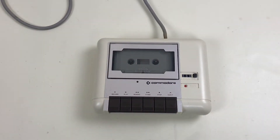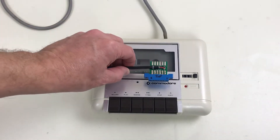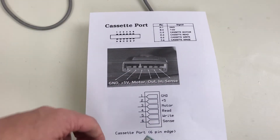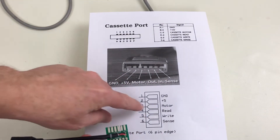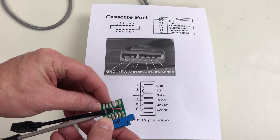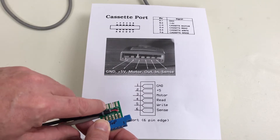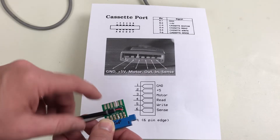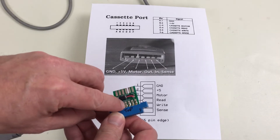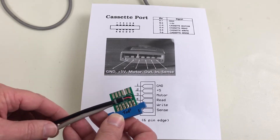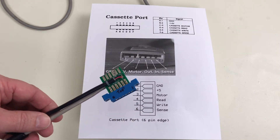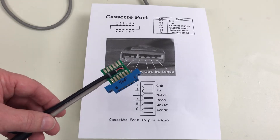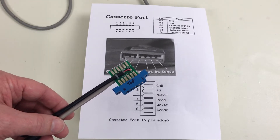Another alternative is to use something like this datasette adapter that I made. Here is your plus 5 volts and ground. Pin 3 is the motor and pin 4 is your read pin, or the audio output. So you could tap a wire onto this pin and hook it up to a powered speaker or a pair of headphones. Fair warning — it's very loud. It's 5 volt level, which is way higher than a typical audio device.